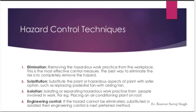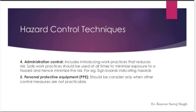How can we control these hazards? First is elimination — removing any behavior, act, or practice from the workplace that can lead to accidents. Second is substitution — replacing hazardous aspects of plant with safer options. Third is isolation — separating hazardous work practices from people involved in work. Fourth is engineering control, the next preferred method if the hazard cannot be eliminated, substituted, or isolated. Fifth is administration control. Sixth is personal protective equipment, which should be considered only when other control measures are not practicable.